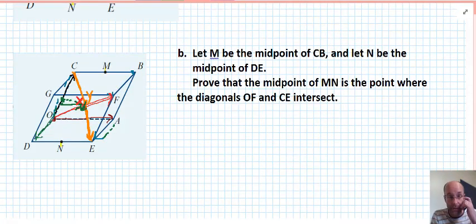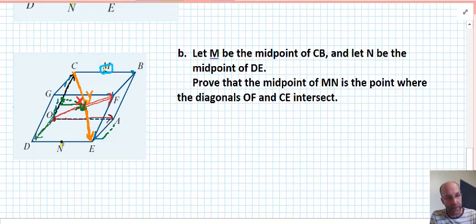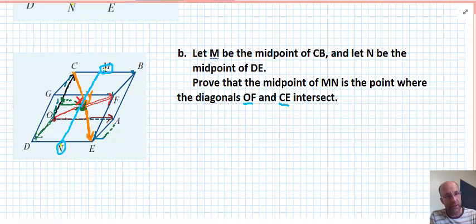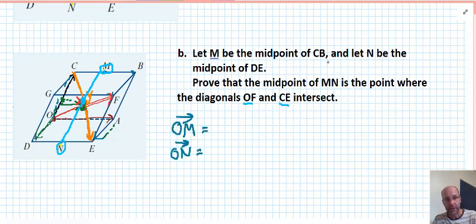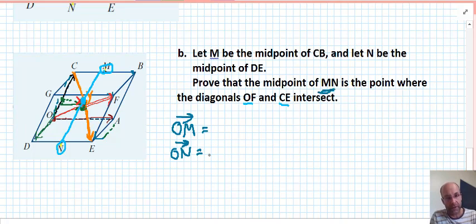Let's start the second part now. Just a reminder, it said that given that M is the midpoint of CB and N is the midpoint of DE as shown, prove that the midpoint of MN is the point where the diagonals OF and CE intersect. OF and CE are the orange and red lines. So we have to prove that MN, the midpoint of that, which I'm trying to show in blue there, so the midpoint of MN is the point where those other two orange and red diagonals intersect. Now to define MN in terms of the vectors we established at the start of the proof, we need to define position vectors OM and ON.